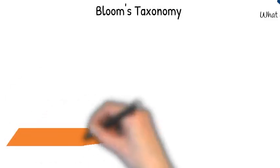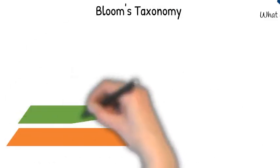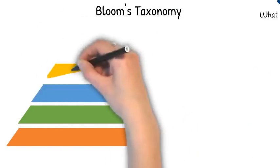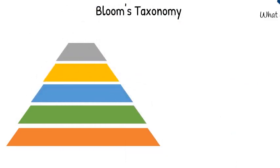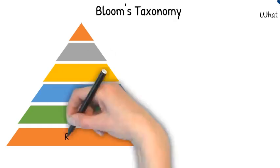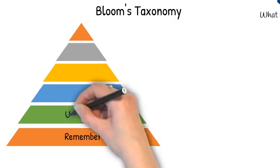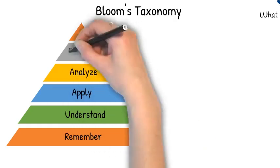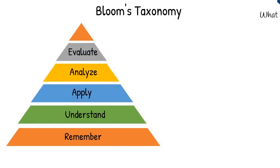Bloom's Taxonomy is a classification system that distinguishes among different levels of cognition. The original Bloom's Taxonomy had five levels, and recently a new sixth level has been added. The levels are: remember, understand, apply, analyze, evaluate, and create.